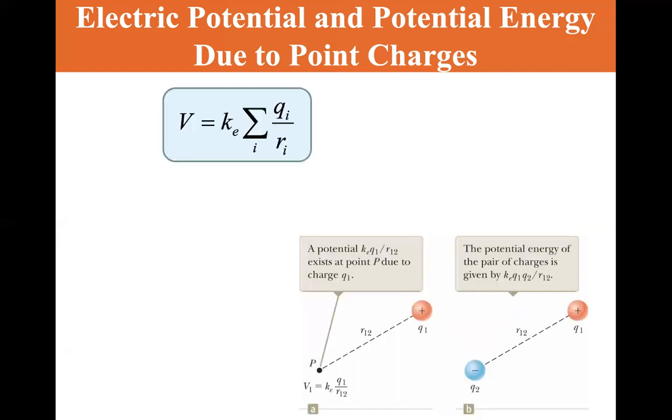So here's two different point charges. V is equal to kₑ times, when you have multiple point charges, it's just a superposition problem. So V equals kₑ times the sum over all the i's of qᵢ over rᵢ.